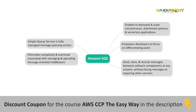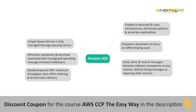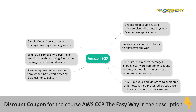Using SQS, you can send, store, and receive messages between software components at any volume without losing messages or requiring other services to be available. SQS offers two types of message queues. Standard queues offer maximum throughput, best-effort ordering, and at-least-once delivery. SQS FIFO queues are designed to guarantee that messages are processed exactly once in the exact order that they are sent.